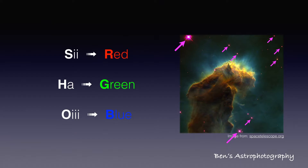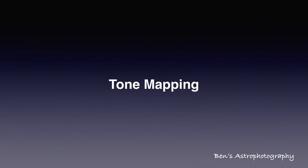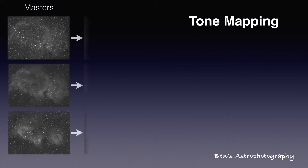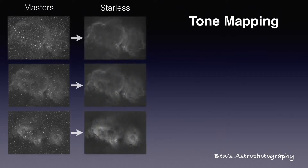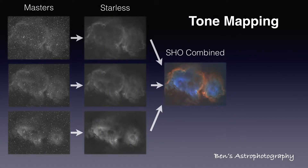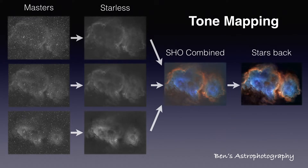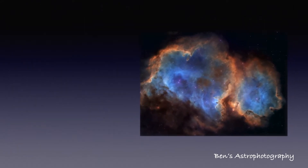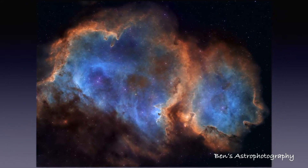To fix this, a popular way is called tone mapping — meaning get rid of the stars temporarily, process the nebulosities alone for color balance, sharpening, and curves, then add the stars back in a later stage. This way you can also avoid unnatural star shapes caused by higher contrast in nebulosity.